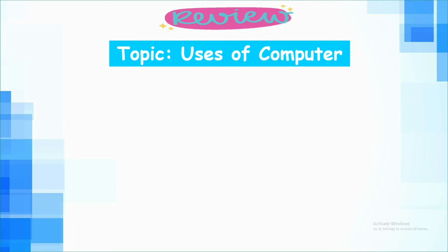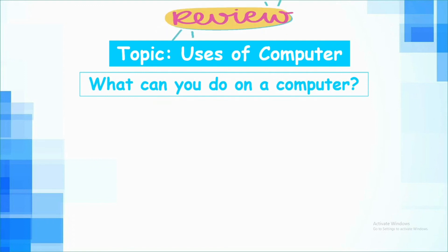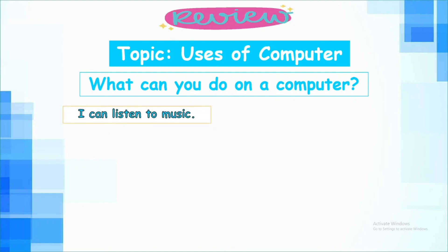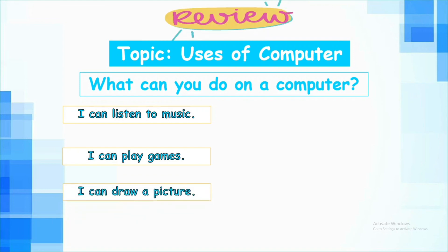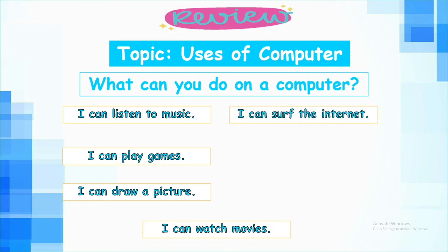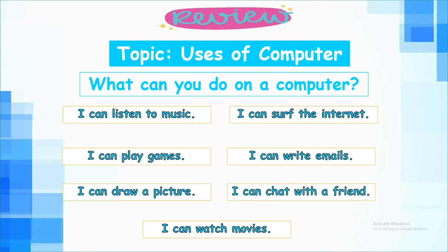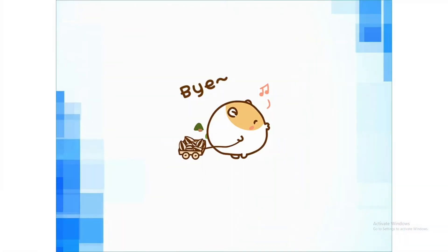That's all for our conversation practice. Now let's have a review. Our topic is about uses of computer. The question is: what can you do on the computer? I can listen to music, I can play games, I can draw a picture, I can watch movies, I can surf the internet, I can write emails, and lastly I can chat with a friend. That's all for today's lesson, everyone. I hope you learned something. Please don't forget to wear your mask if you go out and wash your hands often. See you again next time, goodbye!